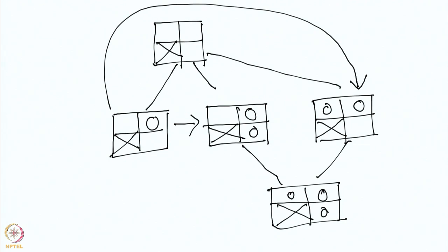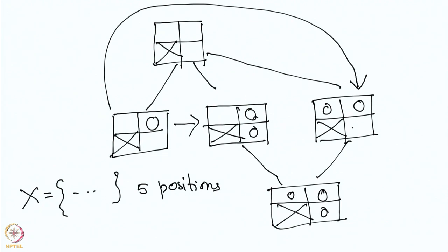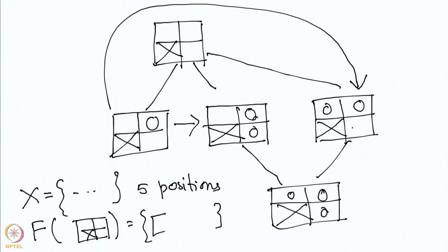So in this setup, the set X consists of all these positions. There are 5 positions total. This is basically how impartial games can be described by graphs.